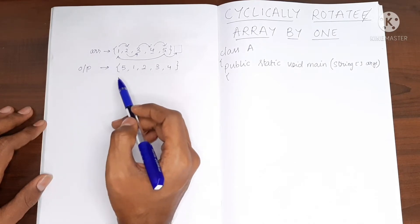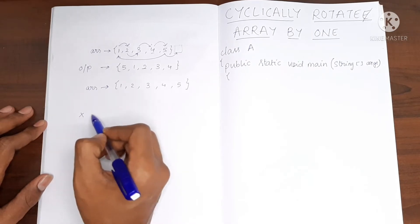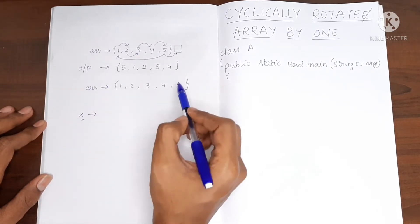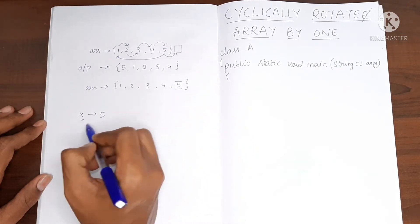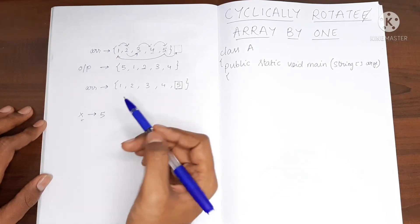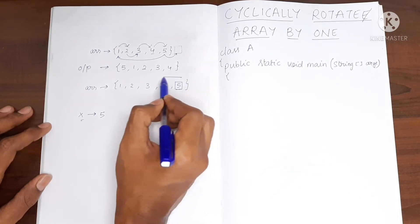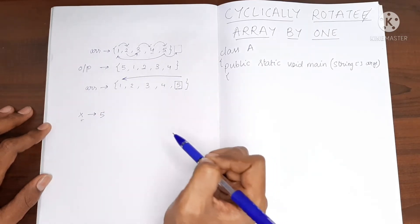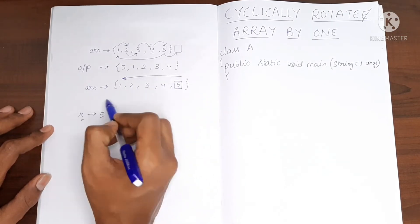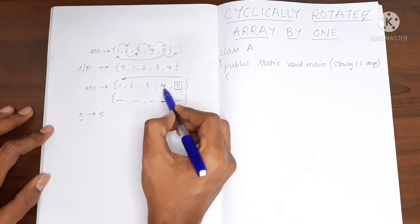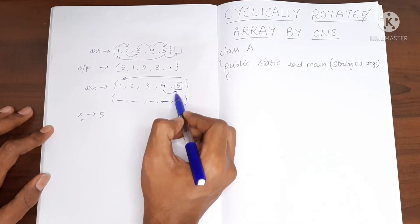So now let's discuss the logic. I will create a variable called x, and in this x I am going to store the value present at the last index. So x will hold 5. Then the next step will be to traverse this array from the end towards the beginning, and I am going to put each value to the next index location.